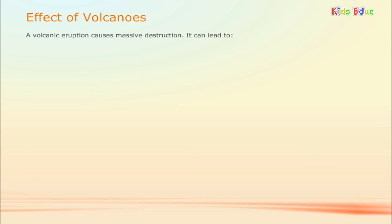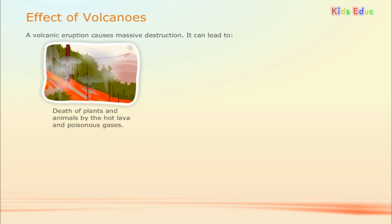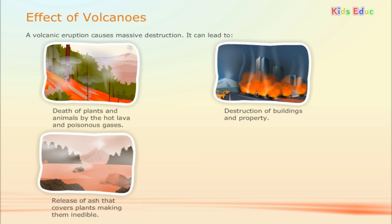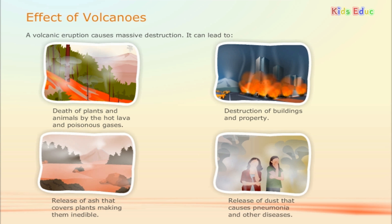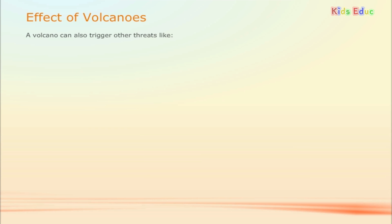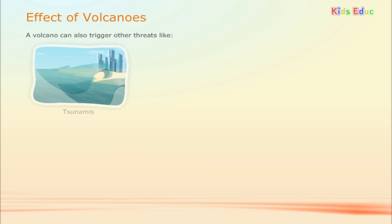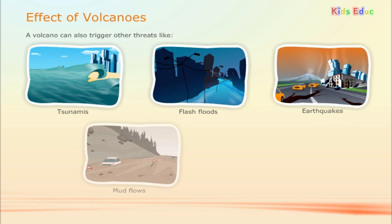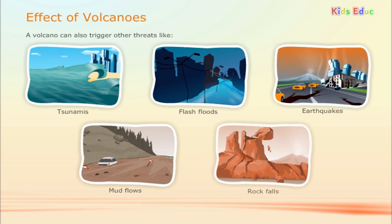A volcanic eruption causes massive destruction. It can lead to the death of plants and animals by hot lava and poisonous gases, destruction of buildings and property, release of ash that covers plants making them inedible, and release of dust that causes pneumonia and other diseases. A volcano can also trigger other threats like tsunamis, flash floods, earthquakes, mud flows, and rock falls.